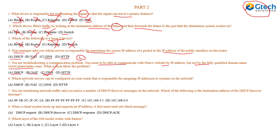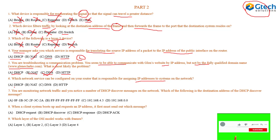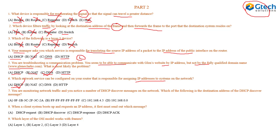Question six: which network service can be configured on your router and is responsible for assigning IP addresses to systems on the network? DHCP — Dynamic Host Configuration Protocol — deals with assigning IP addresses dynamically. So DHCP is the correct answer. Make sure you can differentiate between NAT, DNS, DHCP, and HTTP.